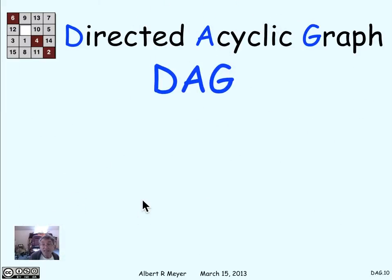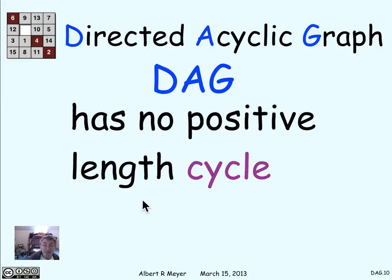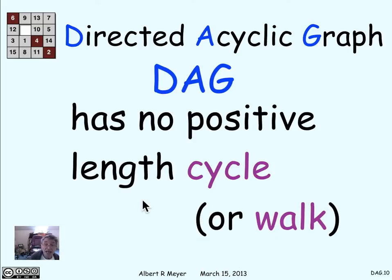A directed acyclic graph is defined simply as a digraph that has no positive length cycles — it's acyclic, no positive length cycles. We can equally well define it as a digraph that has no positive length closed walk, since cycles are a special case of closed walks and closed walks of positive length imply cycles.